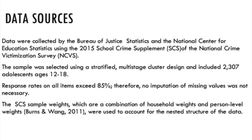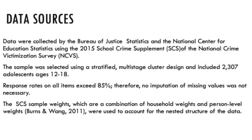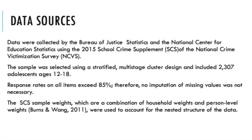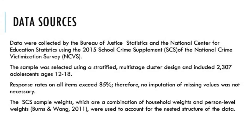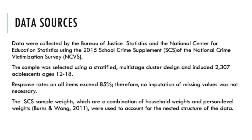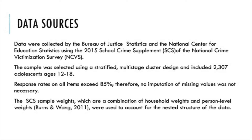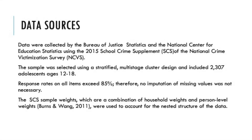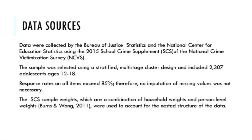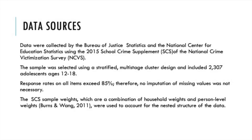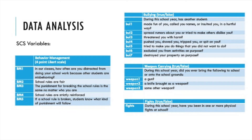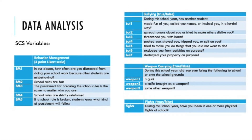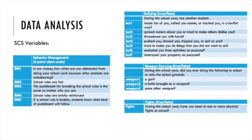Data for the study were collected in 2015 from a nationally representative sample of U.S. adolescents ages 12 to 18 using the school crime supplement of the National Crime Victimization Survey, with a sample size of 2,307 individuals. The sample was selected by the Bureau of Justice Statistics and the National Center for Education Statistics using a stratified multi-stage cluster design. Response rates on all items exceeded 85%, therefore no imputation of missing values was necessary. The school crime supplement sample weights, which are a combination of household weights and person level weights, were used to account for the nested structure of the data. Seven items measuring bullying, five items measuring behavior management at school, and three items measuring weapon carrying at school were used as input for ESEM. Additionally, one item was used as an indicator of engagement in physical fights.